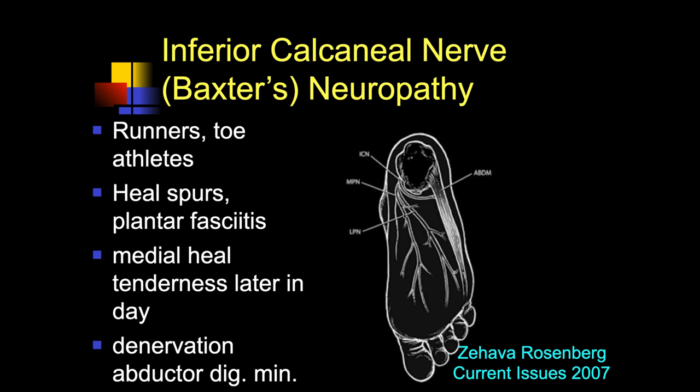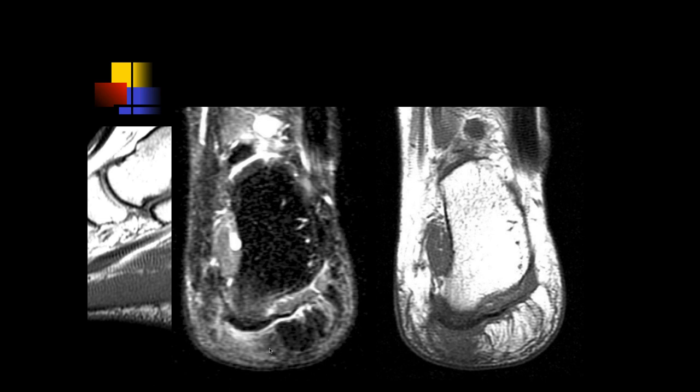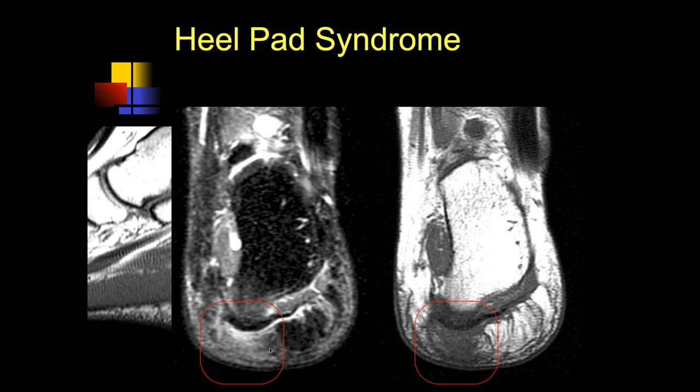You get medial heel tenderness, typically late in the day, and then denervation atrophy of the abductor. Another patient — all these patients have heel pain. We can see the skin marker along the heel and some soft tissue edema within the subcutaneous fat. The central cord is mostly showing superficial edema in the adipose — it's a pressure type of lesion.